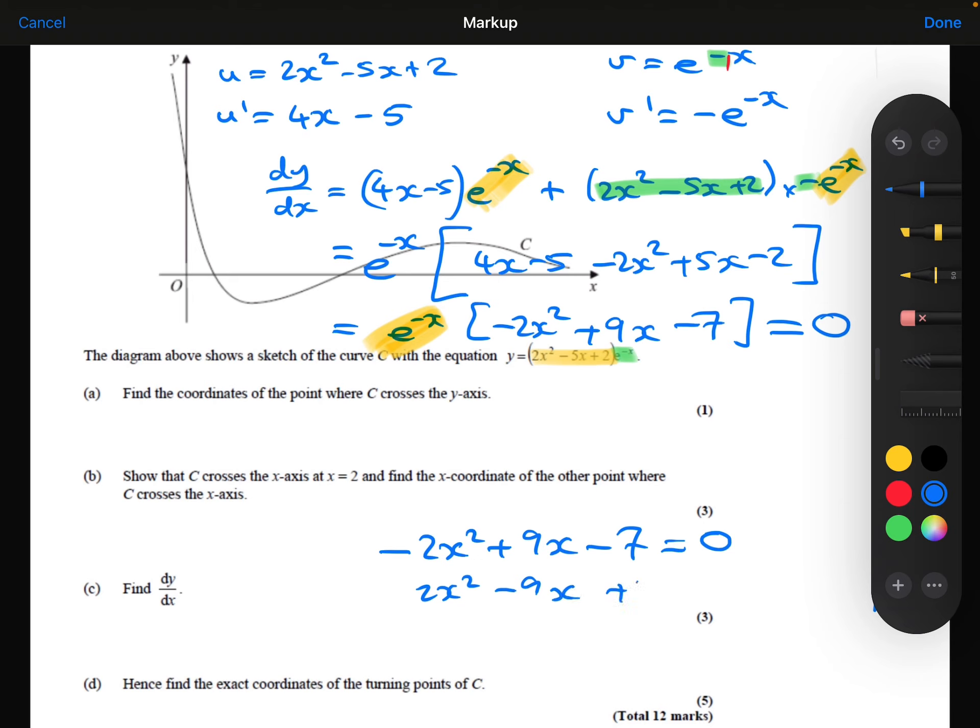Which I can write in a nicer form and then factorize. It's going to be a 7. That's going to be a minus 7 and a minus 1. So I get that either x is 1 or x is 7/2. Those are my two x-coordinates, and then I can substitute each of those back into the original equation to work out what the y-coordinates would be.